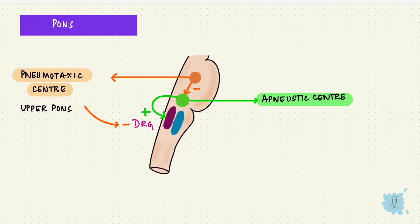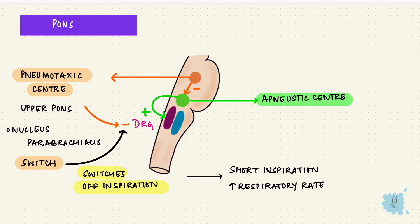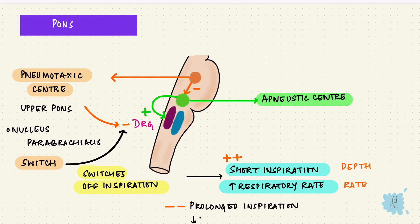The neurons of the pneumotaxic center are in the nucleus parabrachialis. It acts as a switch between inspiration and expiration — it switches off the inspiratory area, limiting inspiration and shortening the duration of inspiration. A shorter inspiration leads to a shorter respiratory period and therefore an increased rate of respiration. So the pneumotaxic center controls the depth and rate of breathing. When stimulated, inspiration is short and respiratory rate increases. When inhibited, there is prolonged inspiration and a reduced respiratory rate.